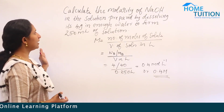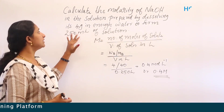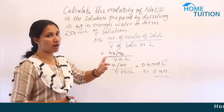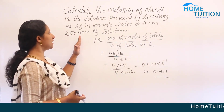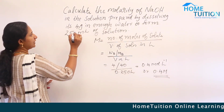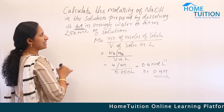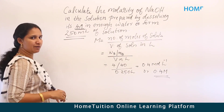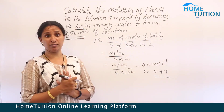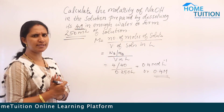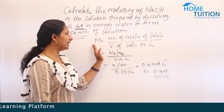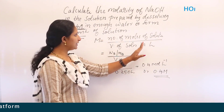Next question: calculate the molarity of NaOH in a solution prepared by dissolving 4 grams in enough water to form 250 mL of solution. We want to find molarity. The equation is: molarity equals number of moles of solute divided by volume of solution in liters.